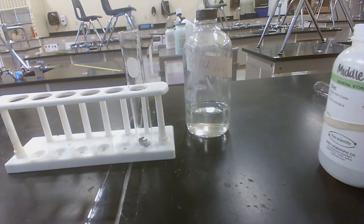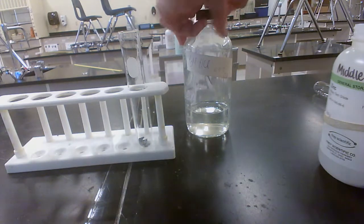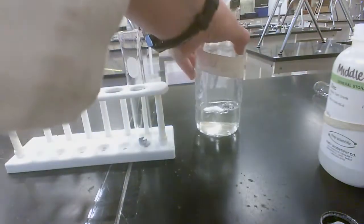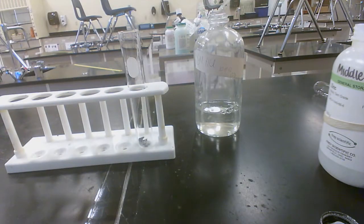Now I'm going to add a squirt of six molar HCl. That means there are six moles of hydrogen chloride dissolved in every liter of water. Okay, so now I'm going to squirt.